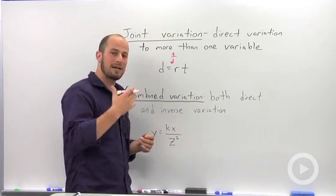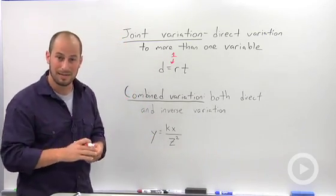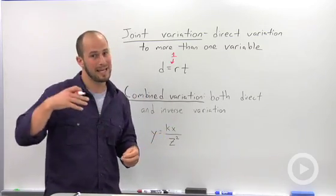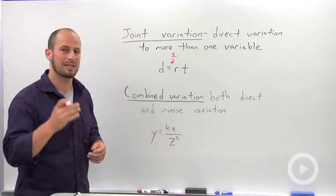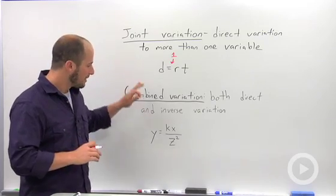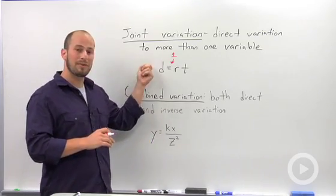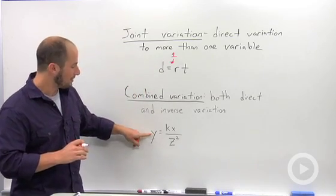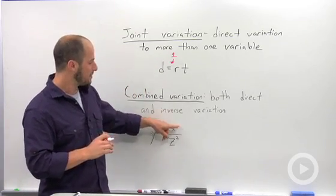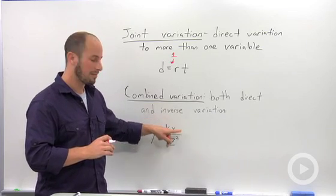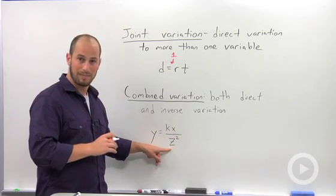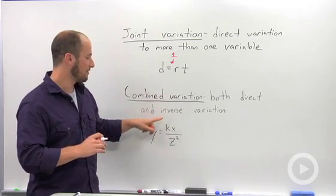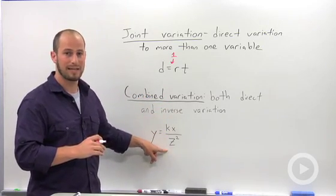The other kind of variation where we can depend on more than one thing is what we call combined variation, where we can have direct and inverse variation in the same equation. This formula isn't an applied formula like distance equals rate times time, but it is one in which the variable y varies directly with x but also inversely with z.